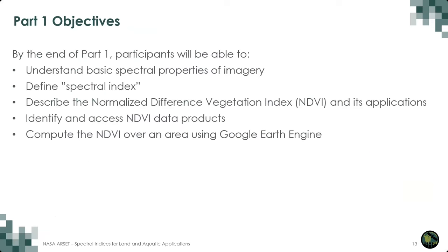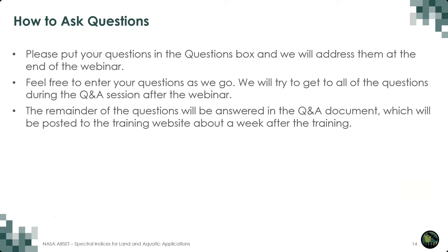For this session, first I will give an overview of the spectral properties of multispectral passive imagery, then discuss what a spectral index is, then talk more specifically about NDVI, identify a few NDVI data products, and then Brittany will provide a demo of calculating NDVI in Google Earth Engine. Please put your questions in the question box and we will address them at the end. If questions are not answered during the session, we'll post a Q&A document on the training website about a week after each session.